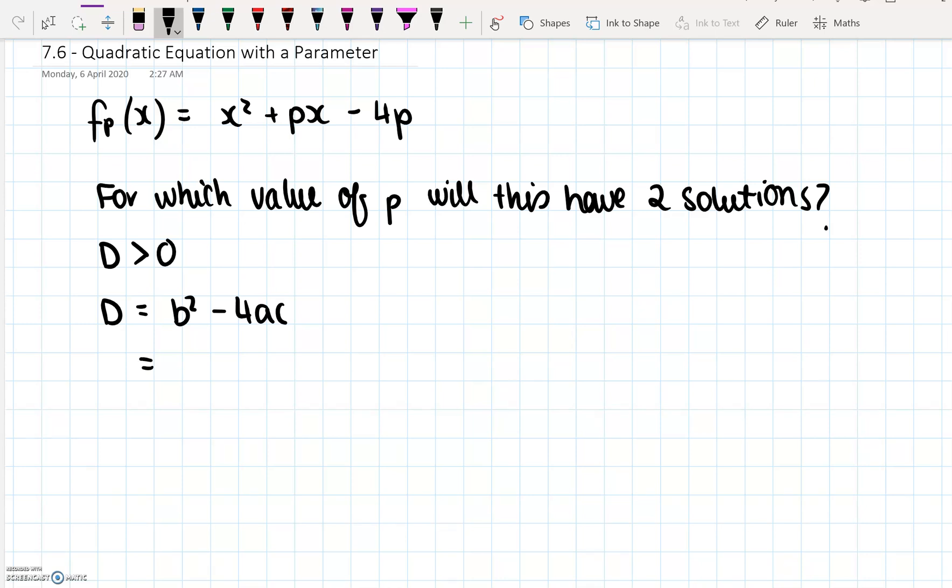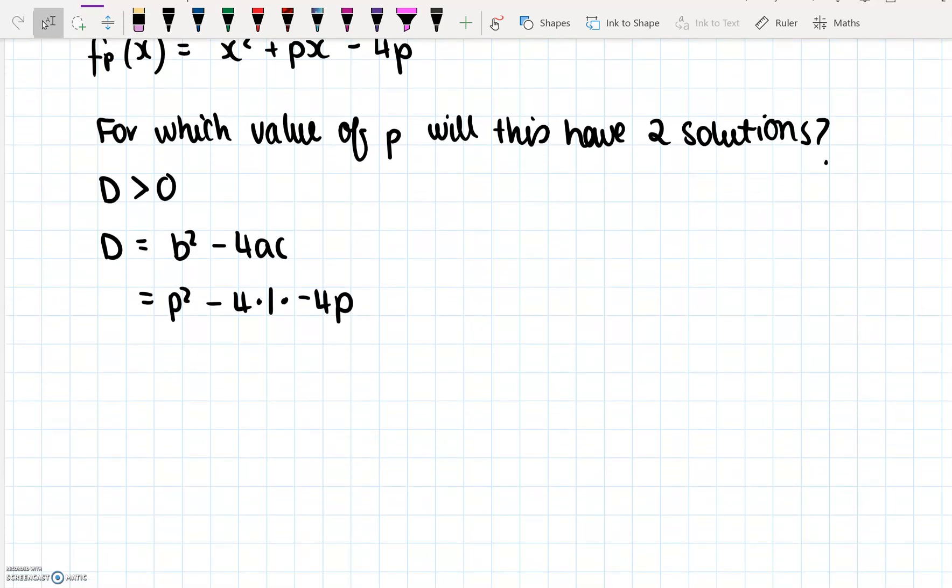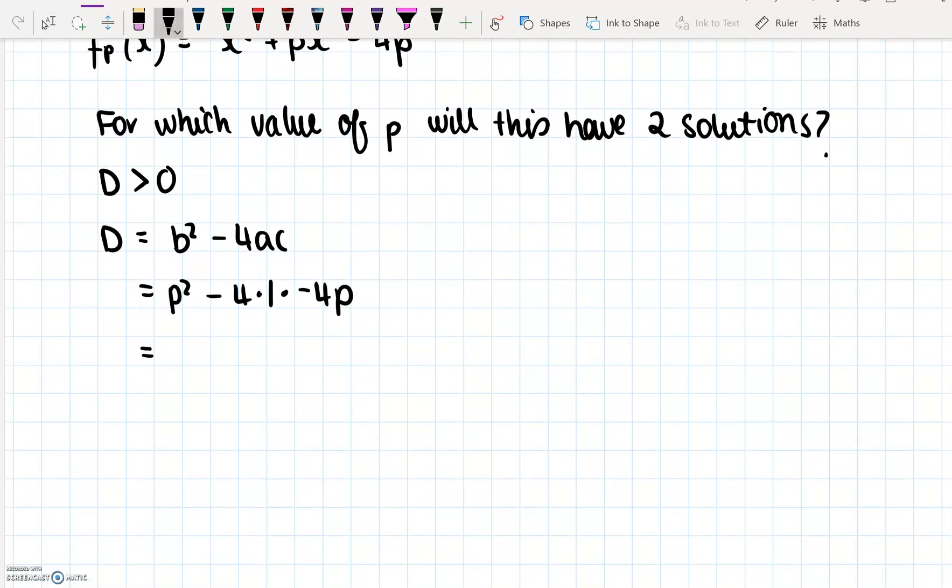And what we have here for b is p, so it's going to be p squared minus 4 times a, which is 1, times c, which is minus 4p. So we're going to get here that D is p squared plus 16p, and this is our discriminant.